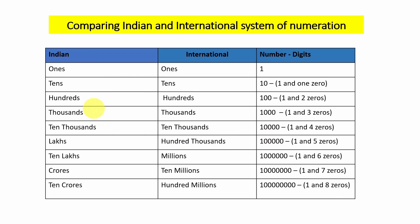In today's video I am going to continue number system. In this chart let us compare the Indian system and international system. In both systems, ones place has one digit, tens place has two digits, hundreds place has one and two zeros, thousands place has one and three zeros, ten thousands place has one and four zeros.